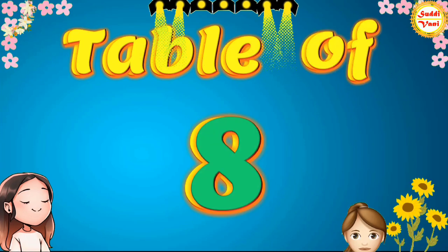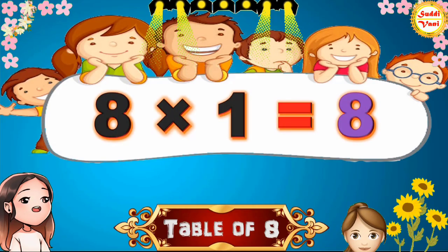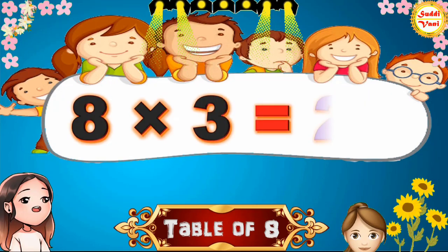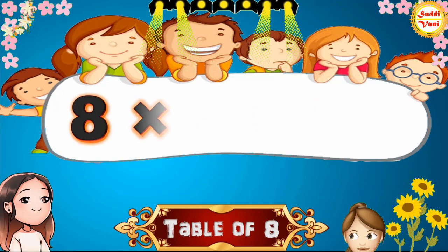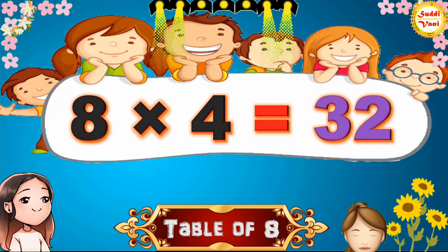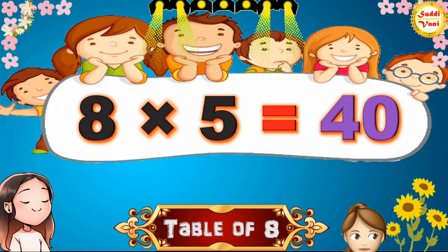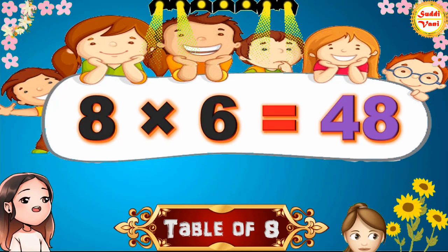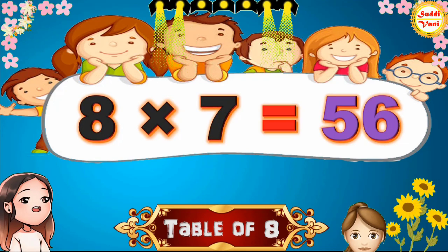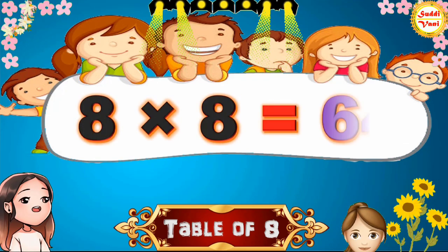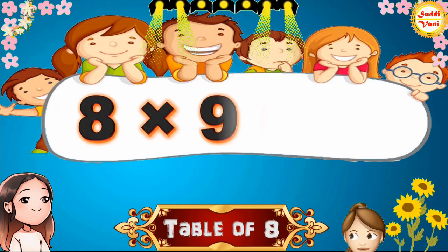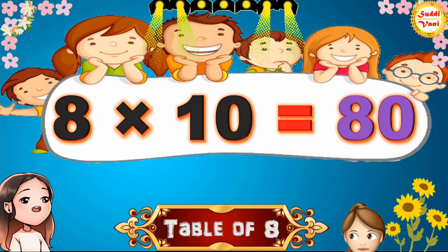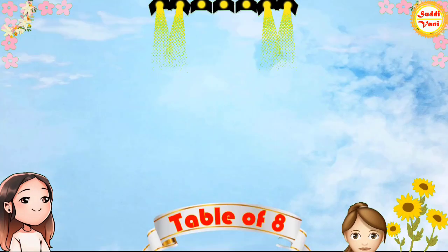Hello children, we will learn table of 8. 8×1=8, 8×2=16, 8×3=24, 8×4=32, 8×5=40, 8×6=48, 8×7=56, 8×8=64, 8×9=72, 8×10=80. Once again,